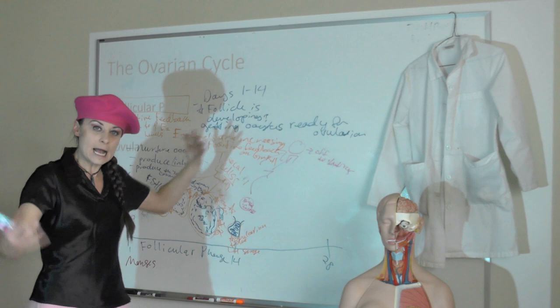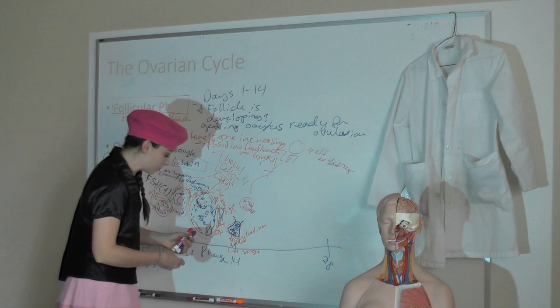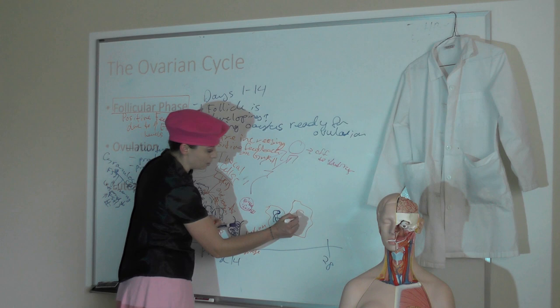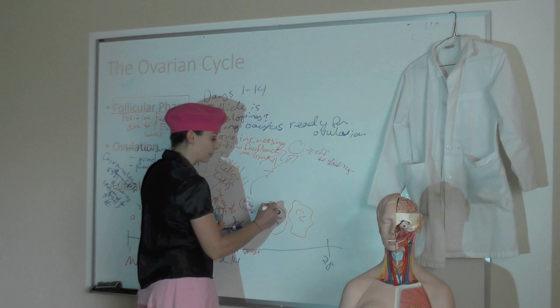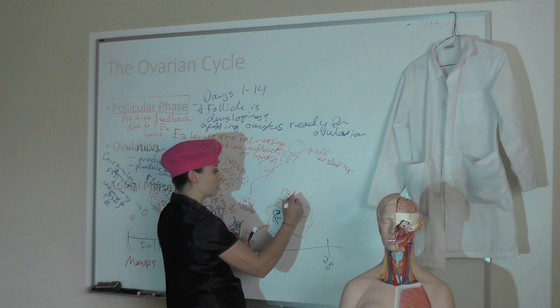What were we producing before? Estrogen — a female sex hormone — and inhibin. All of the cells that remain in the ovary become the corpus luteum. The corpus luteum is going to respond to our LH — declining as it is — by releasing progesterone. So now we're releasing estrogen, progesterone, and inhibin.